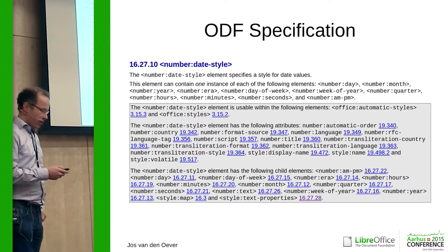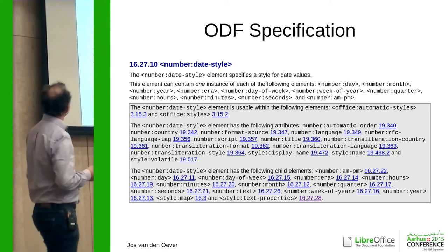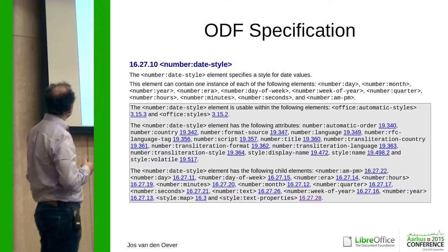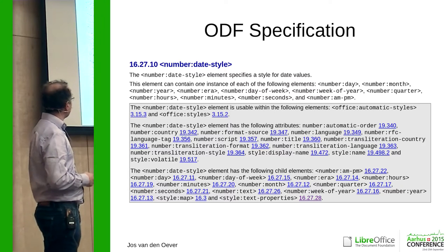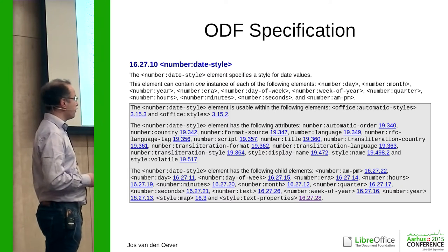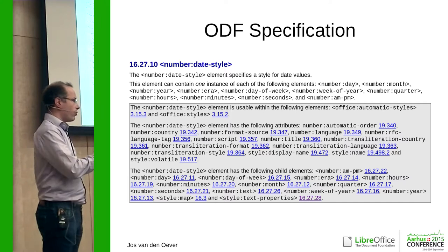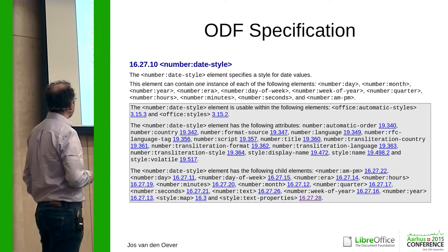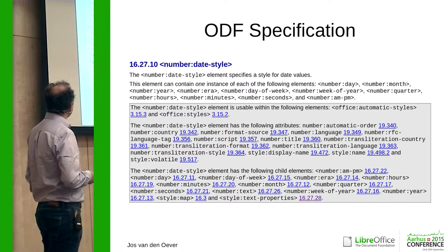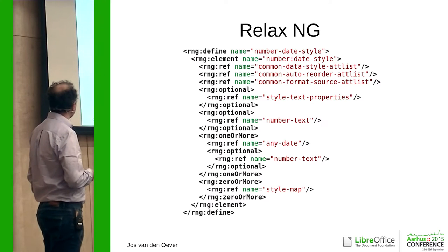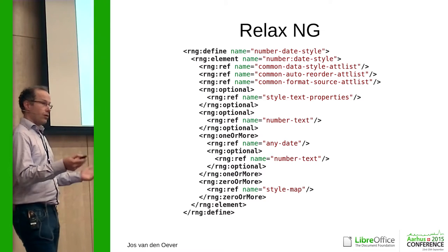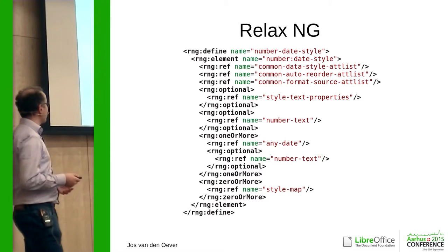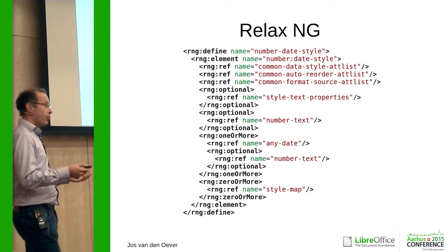The ODF specification has something to say about this element — number date style. It can be used in automatic styles. It can have a number of attributes and a number of child elements. This is what the programmers are reading when they're writing the software. This is human readable and it's derived from a schema.